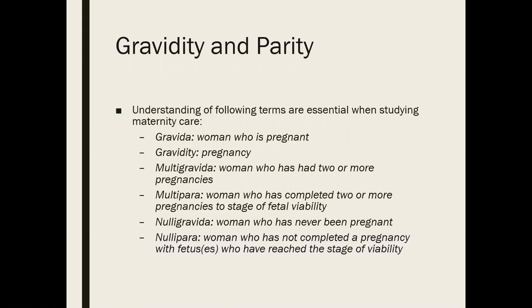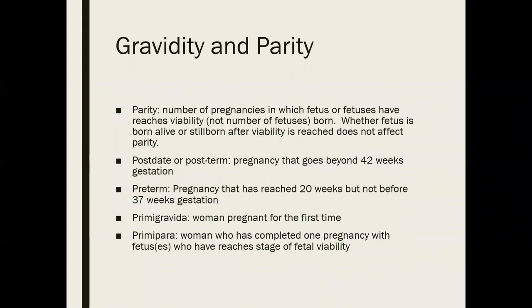You don't have to have a live birth — you could have a stillbirth — but you have to have carried the pregnancy to the point of viability. Nulligravida is a woman who has never been pregnant, and nullipara is someone who may have been pregnant one or more times but has not carried that fetus to the point of viability. Parity is the number of pregnancies in which the fetus, or multiple fetuses, have reached viability. With parity, it's not whether you had a live birth, but whether you carried them to the point of viability.